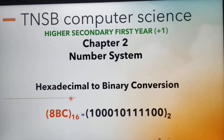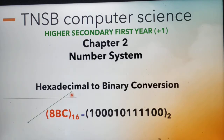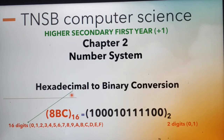We know hexadecimal means 16. Hexa means 6, decimal means 10. So we have the combination of 16 digits from 0 to 9 and alphabets from A to F. Its base is given as 16.